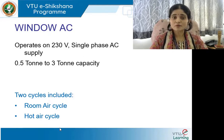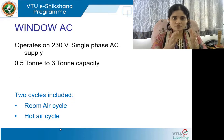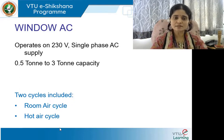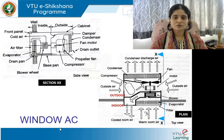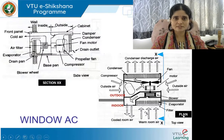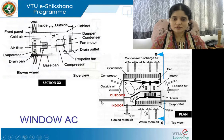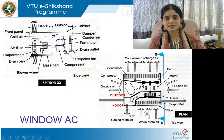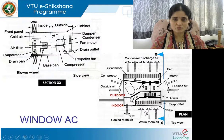The two cycles involved in a window AC correspond to the two sides of the unit: the room air cycle and the hot air cycle. What you see to the right side is the plan of the AC system, and to the left is the section. The particular line on the plan indicates the building edge wall, showing the indoor and outdoor components and the casing of the unit.